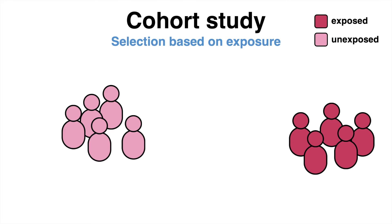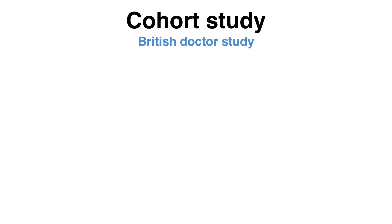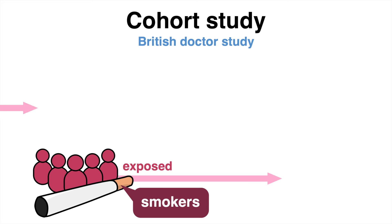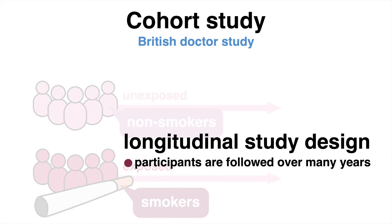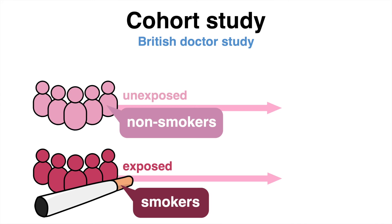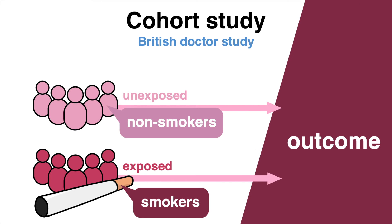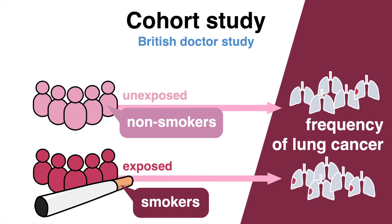A well-known example is the British Doctor Study, in which people were divided into two groups with different exposure: smoking and non-smoking. As a longitudinal study design, participants are then followed over time — sometimes many years — until the occurrence of the outcome of interest can be statistically evaluated between the different cohorts. The prospective British Doctor Study followed participants for 50 years and assessed the frequency of lung cancer cases in smokers versus non-smokers.